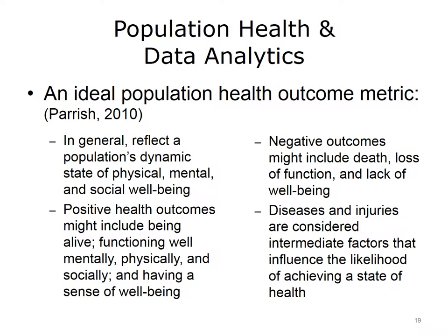Positive health outcomes might include being alive, functioning well mentally, physically, and socially, and having a sense of well-being. Negative health outcomes might include death, loss of function, and lack of well-being. Diseases and injuries are considered intermediate factors that influence the likelihood of achieving a state of health, but are not health itself.